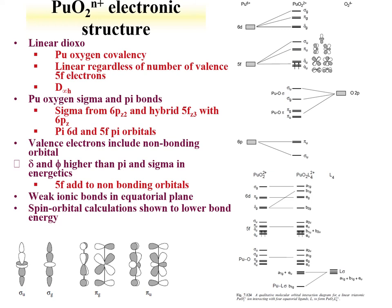Like the uranyl system, the PuO₂²⁺ cation is linear with the same symmetry as uranyl. Plutonium and oxygen interact through sigma and pi bonds; there is weak ionic bonding in the equatorial plane. The full molecular orbital description is similar to uranium except with additional electrons, and this framework extends to binding of ligands in the plutonyl system. This molecular orbital picture can be used to explore UV-visible spectroscopy of the plutonyl system.